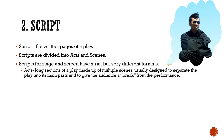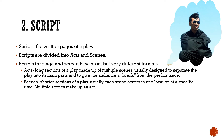Acts are long sections of a play, made up of multiple scenes, usually designed to separate the play into its main parts and to give the audience a break from the performance. Scenes are shorter sections of a play — usually each scene occurs in one location at a specific time, and multiple scenes make up an act.